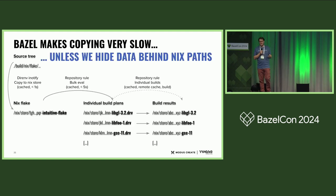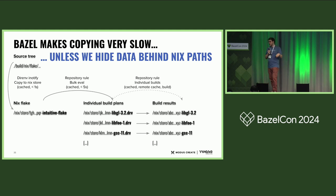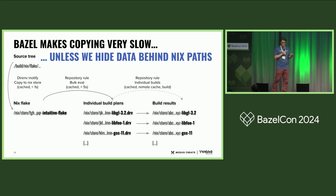Instead of exposing files, you give Bazel strings representing the Nix store path. Bazel sees a string that is content-addressed, so if there is any change, Bazel will see the change in the string itself but doesn't deal with the data. We can do the same with the build plan: when Nix has evaluated the Nix expression it comes out with a build plan, and the build plan is also a unique hash — a Nix path. So I can say, "I need to build that package, and this is the name of the build plan." If the name of the build plan didn't change, it's the same Nix package — Bazel sees no change in the inputs and doesn't rebuild.